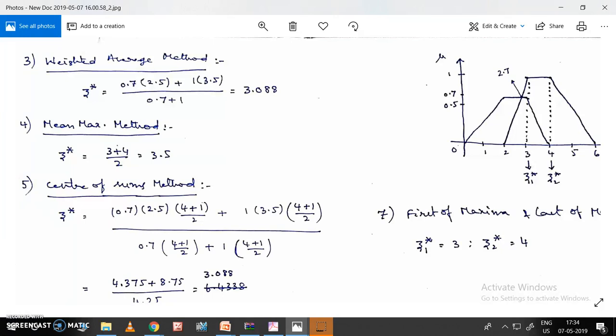Next, coming to mean max method. The maximum value of the union is 1, and it is from 3 to 4. So the mean is 3 plus 4 divided by 2, which equals 3.5.